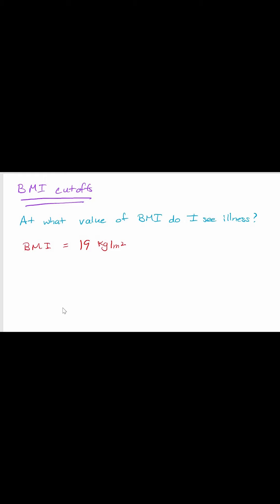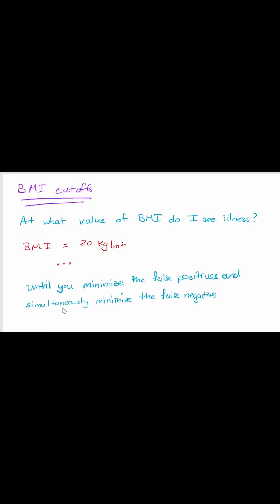Let me try raising it to 19. Some folks who have cooties may be below 19, but the majority will be above 19. So it's not optimal, but I've got most of the people with cooties, while now having some false negatives — people I say don't have the disease, but they do. I keep raising that BMI until I reach a value that minimizes the false positives while simultaneously minimizing the false negatives. It's a two-part minimization: I don't want to wrongly say someone has the disease, and I don't want to miss someone who really does.